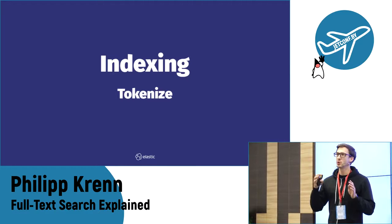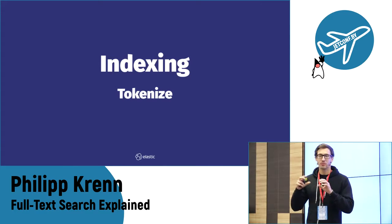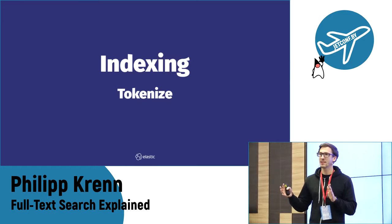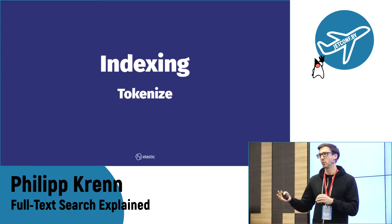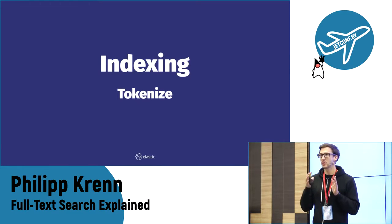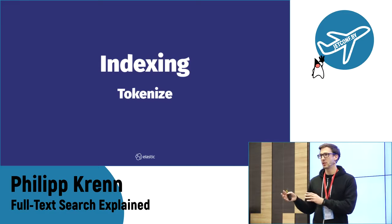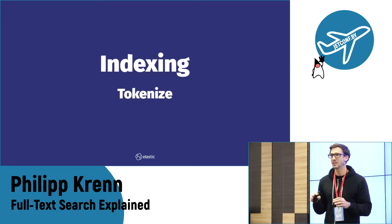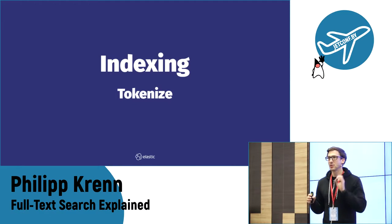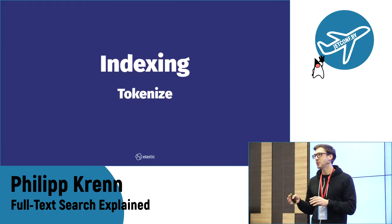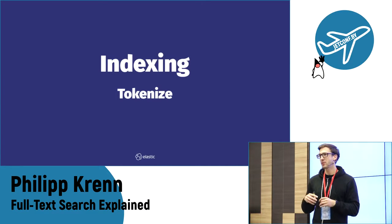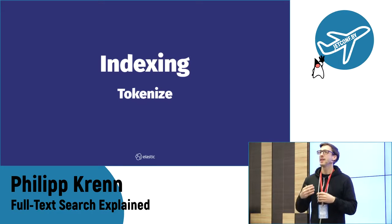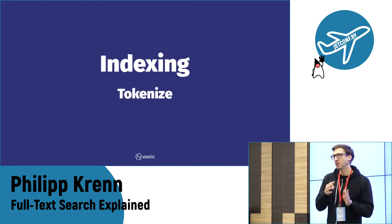Then you normally tokenize. Tokenizing means you have, for example, one sentence and you find the tokens of that sentence — basically each of the individual words. You split on any spaces, on any punctuation marks. The full-text search engine will only look at these words individually. What a full-text search engine does not do is really understand your sentence — it is not natural language processing. It just takes words and operates on these words.